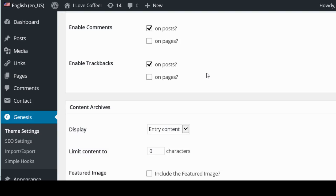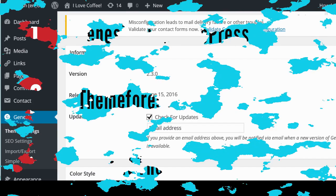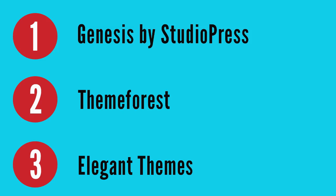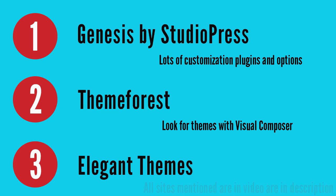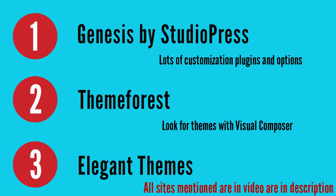How much you can customize really depends on your theme. My favorite premium themes are StudioPress, ThemeForest, and Elegant Themes. StudioPress doesn't necessarily have the best designs but they have the most customizable themes. Many ThemeForest themes come with a plugin called Visual Composer, which gives your theme drag-and-drop functionality. Look into ThemeForest themes that include Visual Composer if you want more control over your design.